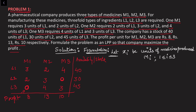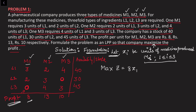Let xi be the units of medicine Mi produced, where i varies from 1 to 3 — these are the decision variables. The objective is to maximize profit. Per unit profit is rupees 8 for M1, so multiply by x1; rupees 13 for M2 gives 13x2; and rupees 10 for M3 gives 10x3. The objective function is: Maximize Z = 8x1 + 13x2 + 10x3, subject to the constraints.